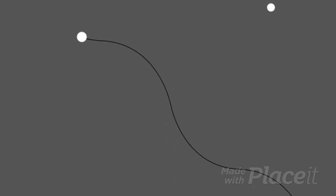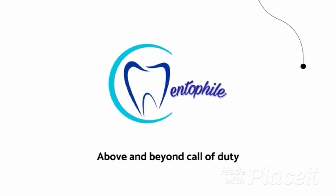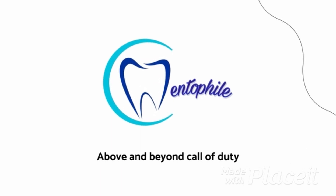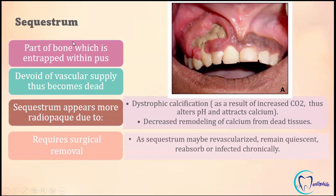Sequestrum. It's the part of the bone which is entrapped within the pus. It is devoid of vascular supply and thus becomes dead.